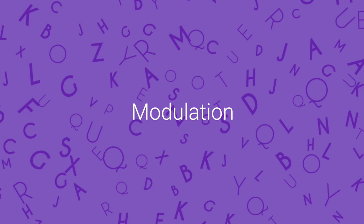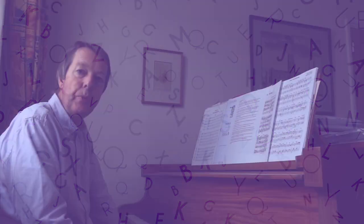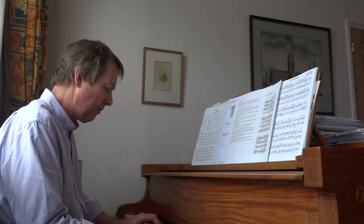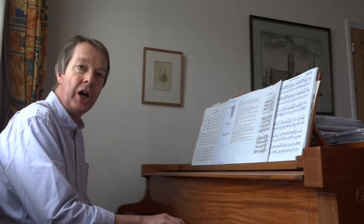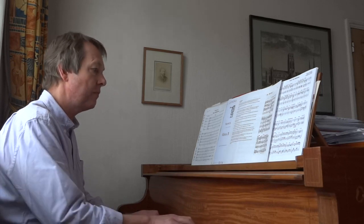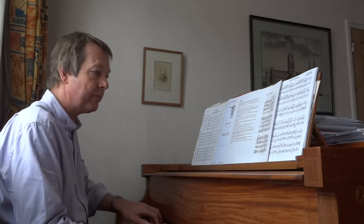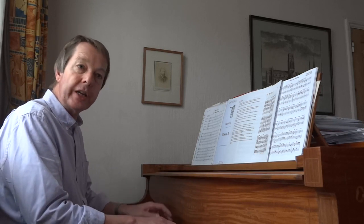Before we end, one other thing we can explore with the circle of fifths is modulation. I'm sure you heard that I altered one of the chords — the fifth chord — instead of having a D natural, had a D sharp, which is the leading note of the next chord E minor and gives us a modulation of sorts.